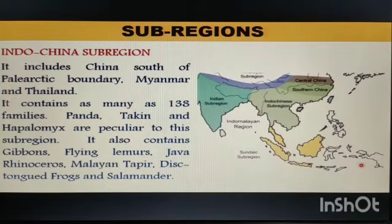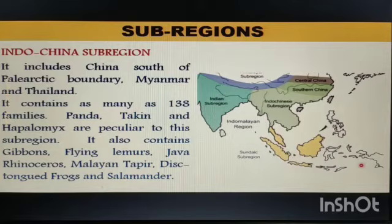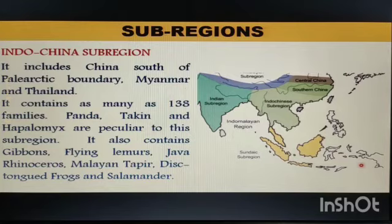The third sub-region is the Indochina Sub-region. It includes China south of the Palaearctic boundary, Myanmar, and Thailand. It contains as many as 138 families. Panda, Tapir, and Haplomys are peculiar to this sub-region. It also contains gibbons, flying lemurs, Javan rhinoceros, Malayan tapir, disc-tongued frogs, and salamanders.